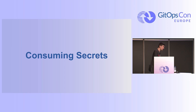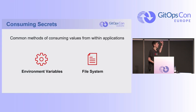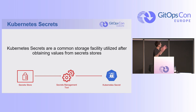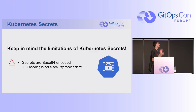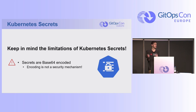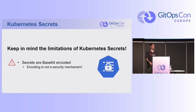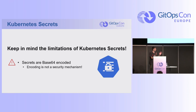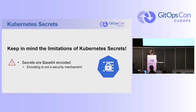We talked about how we store and access secrets. Now the most important part: how do we actually use them? There are two common ways to consume secrets in your GitOps process: one is environment variables, and two is through a file system. The simplest way is a Kubernetes secret — that's the de facto way of storing sensitive values in Kubernetes. However, there are limitations: Kubernetes secrets are base64 encoded, and base64 encoding is not a security mechanism. You can decode it in seconds. It's great for development or your local machine, but not for production.